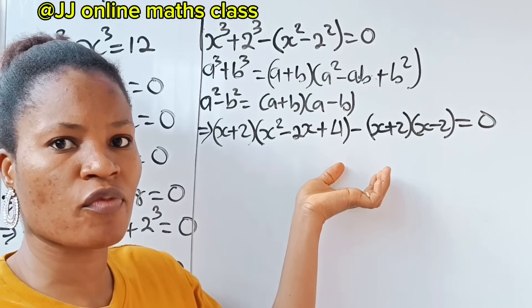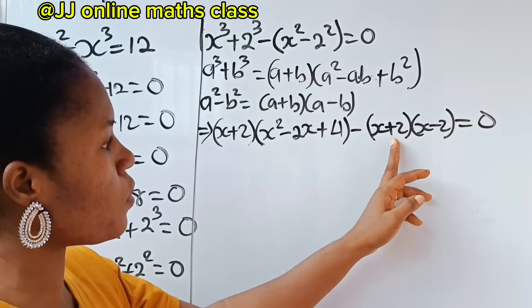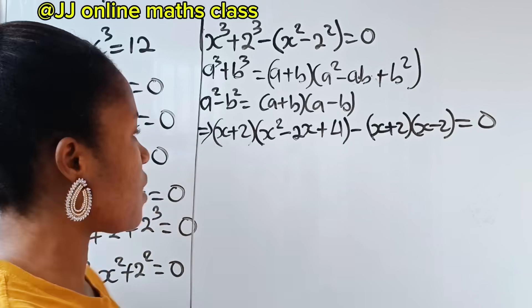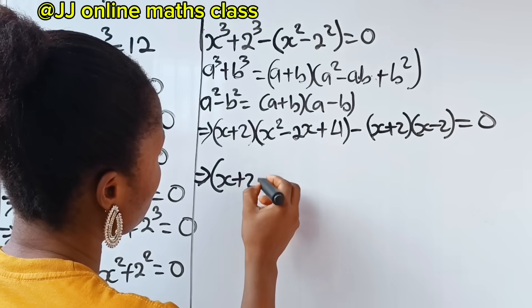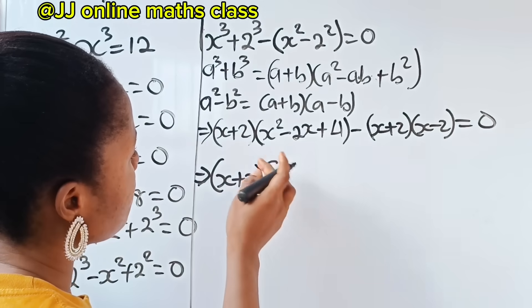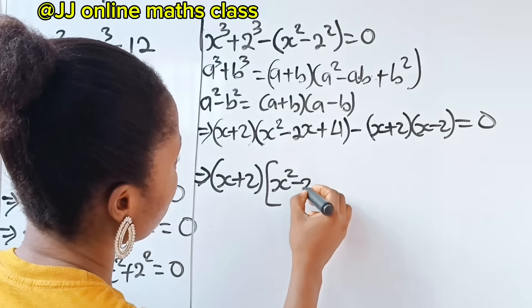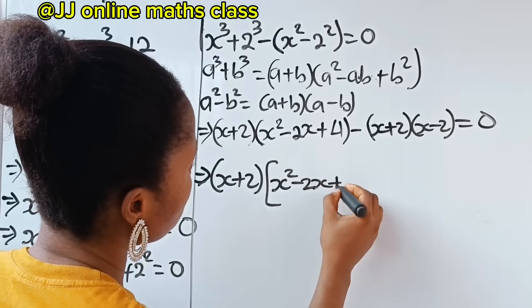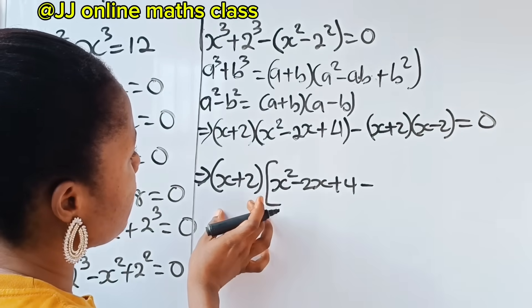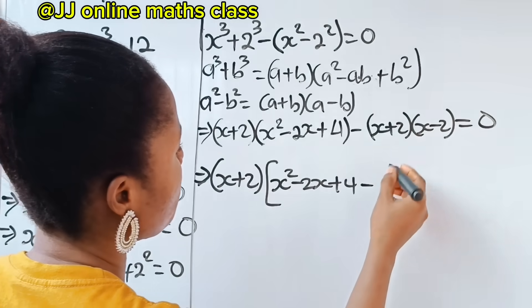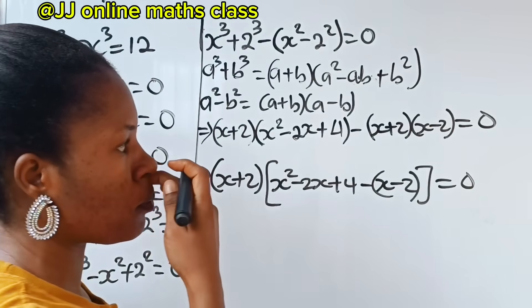Now, I want you to look at this — you are going to see x plus 2 and x plus 2. So let's factorize that. If we do that, we are going to have x plus 2, open bracket — when this is divided by this, x squared minus 2x plus 4 will remain. Then minus, when this is divided by this, x minus 2 will remain. Equal to 0.